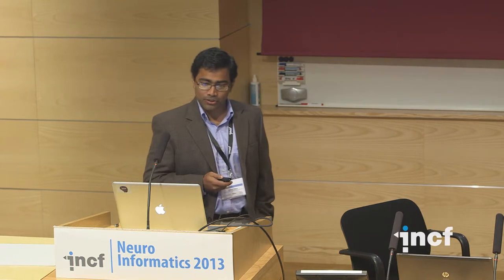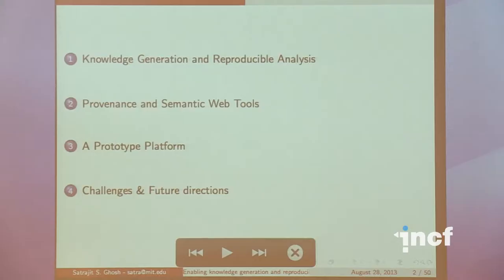The four areas I'm going to talk about today: knowledge generation and reproducible analysis. I'm not going to go deep into what knowledge is — that's for a separate discussion, perhaps over beer this evening. Provenance and semantic web tools — this is an area I'm fairly interested in these days and we've been building up a prototype platform based on these tools. And some of the challenges in future directions as we move forward in integrating information coming out in the scientific literature.